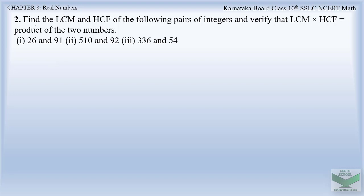The question says: find the LCM and HCF of the following pairs of integers and verify that LCM × HCF is equal to the product of the two numbers. So we have to prove that LCM(a, b) × HCF(a, b) is equal to the product of the two numbers a and b.